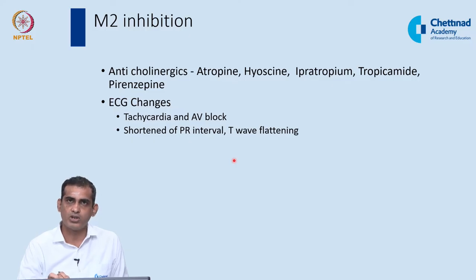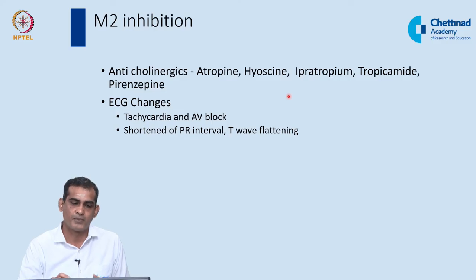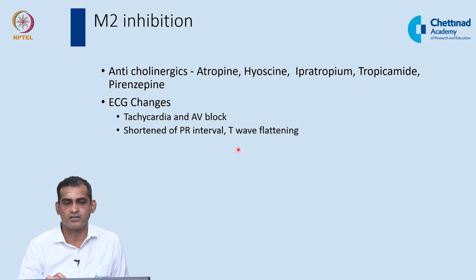M2 receptor inhibitors — anticholinergics — include atropine, hyoscine, ipratropium (used for bronchial asthma), tropicamide (used as eye drops for refraction), and pirenzepine (used for peptic ulcers). These drugs inhibit M2 receptors, leading to cardiac stimulation: tachycardia with increased heart rate, sometimes AV nodal block, reduction in PR interval duration, and occasionally flattening of the T wave.